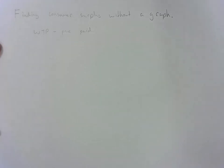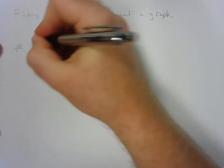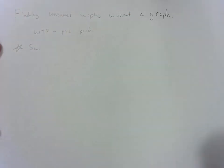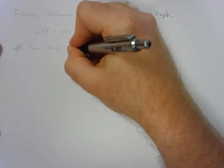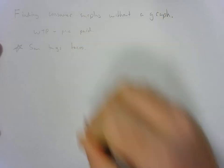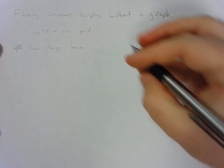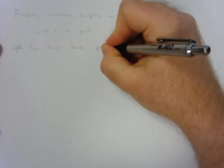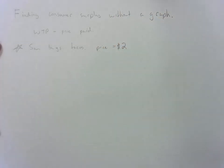We'll start by reading the question carefully to make sure we understand it correctly. Our example features a character named Sam, who is going to buy some tacos. The market price — or the price paid — for the tacos is $2, which is what Sam pays.